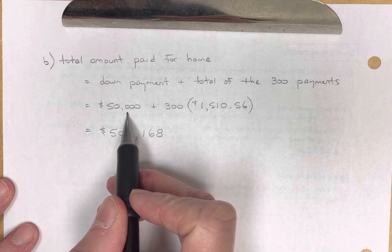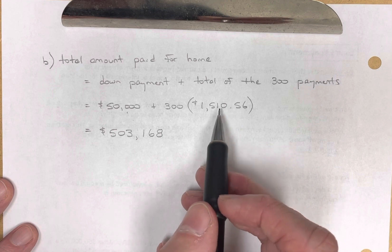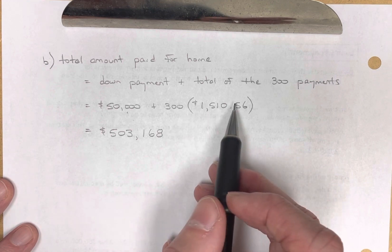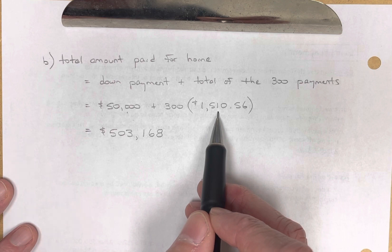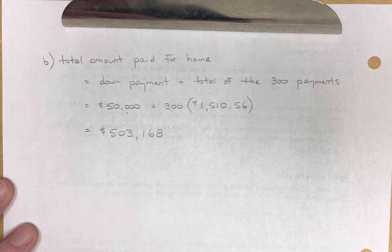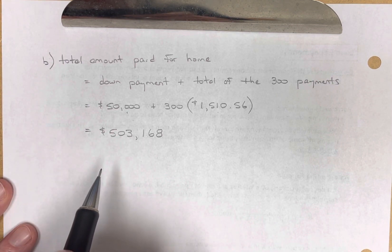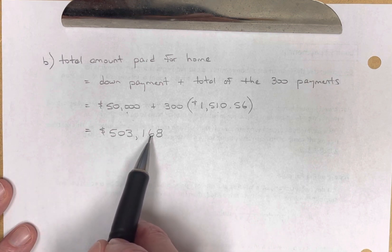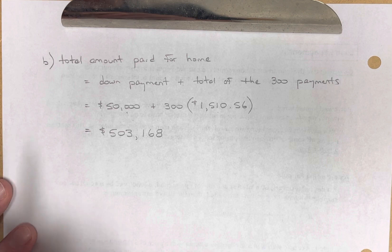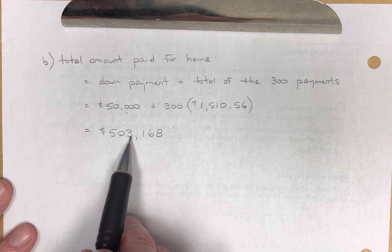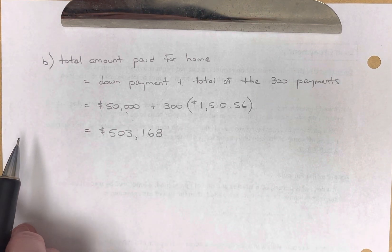$50,000 was what they had in their pocket when they bought the house, and they put that toward the payment. They borrowed $180,000, but they had to pay the bank plus the fee over 25 years, and every month they were paying $1,510.56. And so the total amount they paid for the home would be $503,168. Wow, huh? It was a $230,000 home, and they're paying more than double. They're paying more than double the price of the home because of the fee for borrowing. But that's how it works over a long period of time.